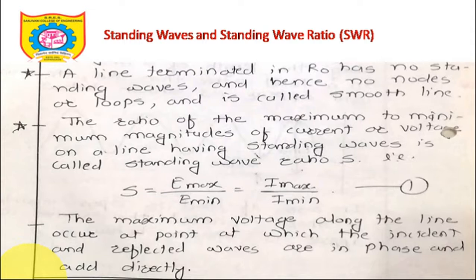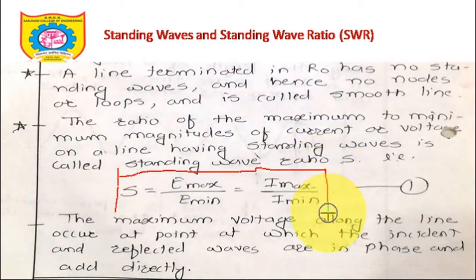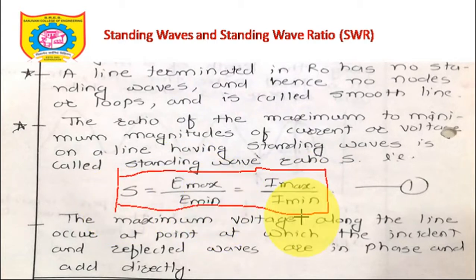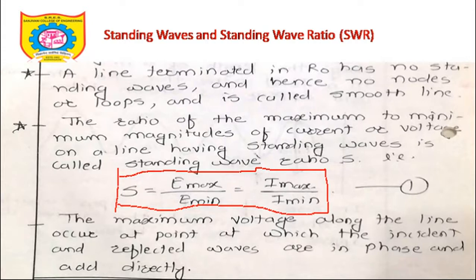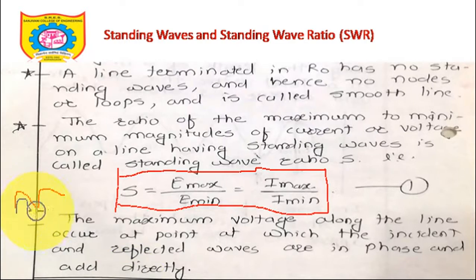The ratio of maximum to minimum magnitude of current or voltage on a line having standing waves is called the standing wave ratio (SWR). So SWR is Emax/Emin, which also equals Imax/Imin. The maximum voltage along the line occurs at a point where the incident and reflected waves are in phase and add directly.